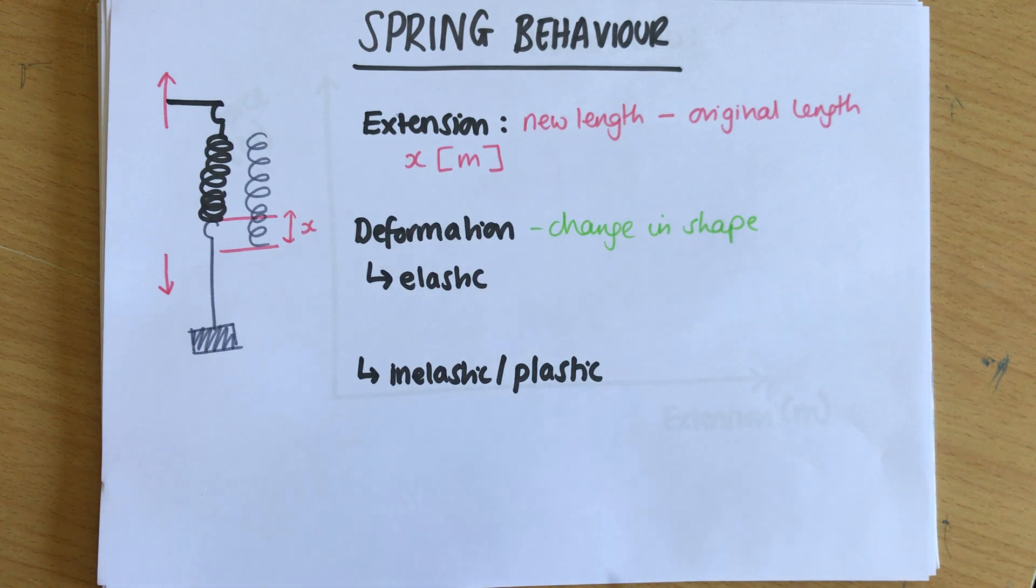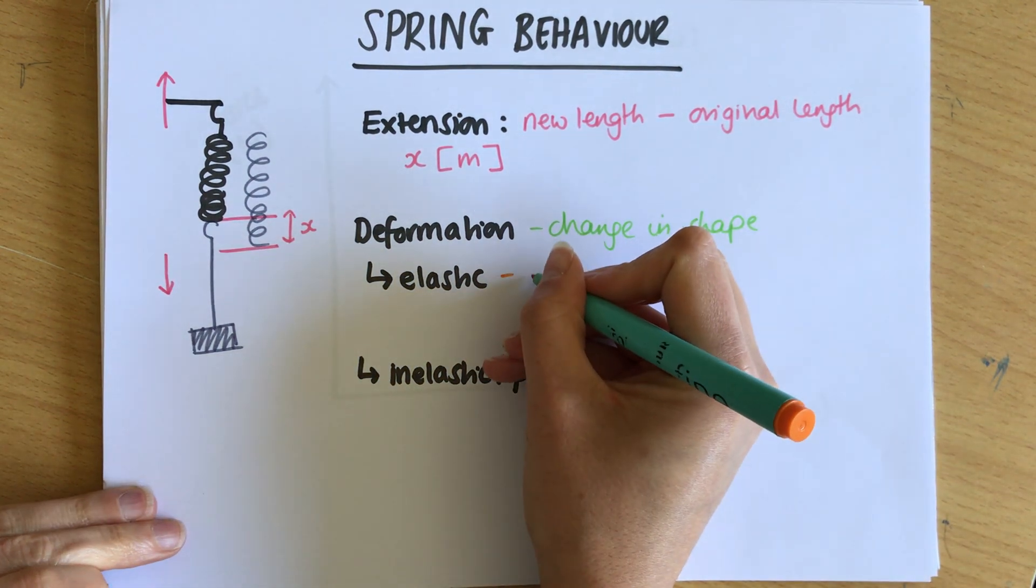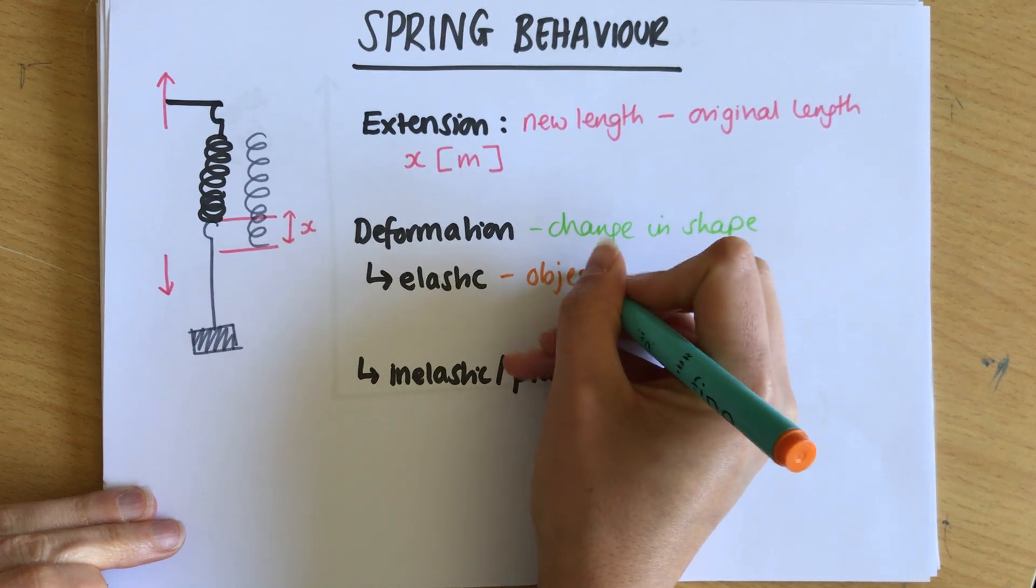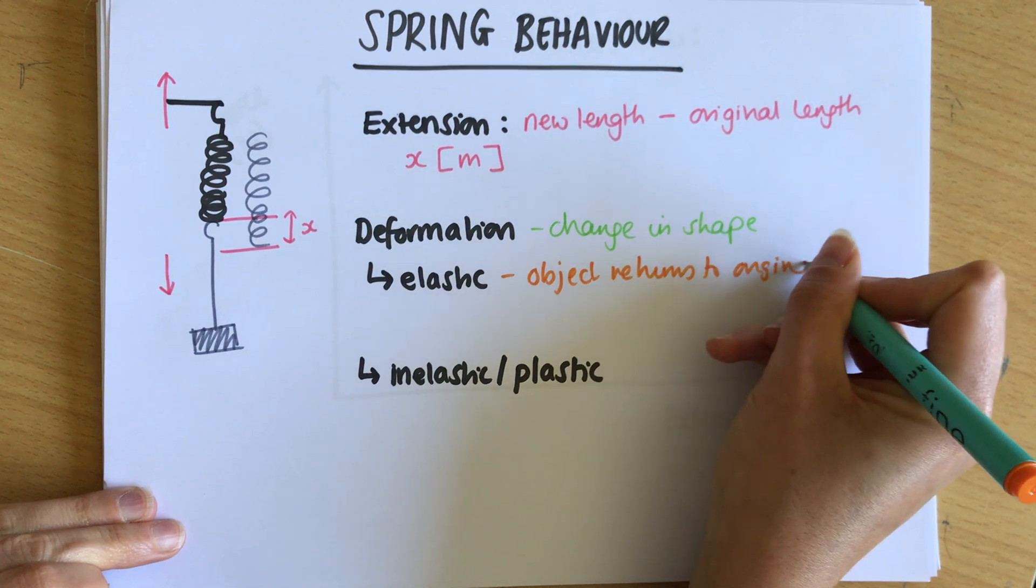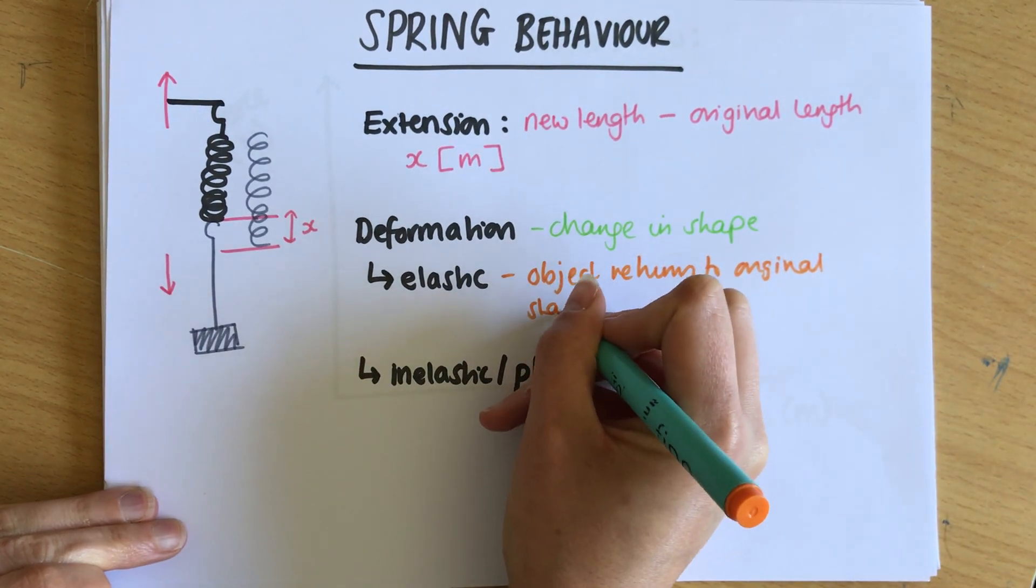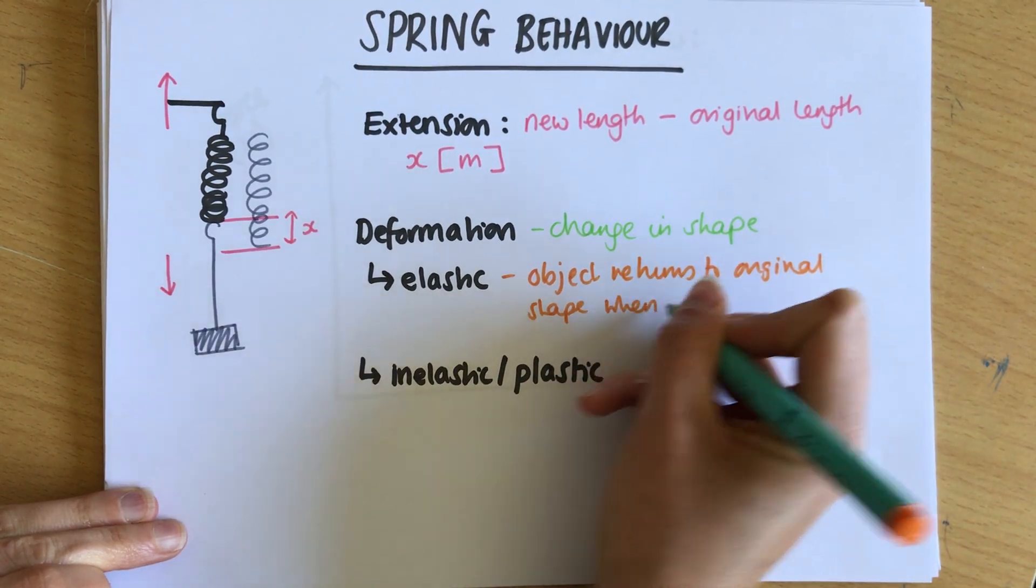Elastic deformation occurs when the object returns to the original shape when the force is removed.